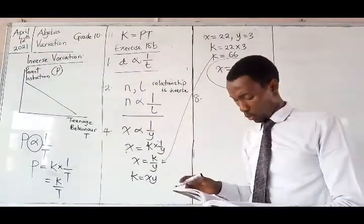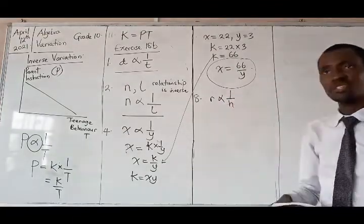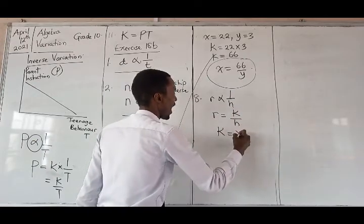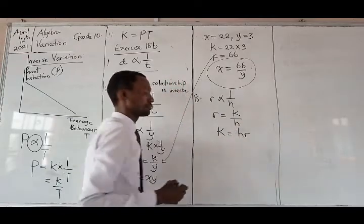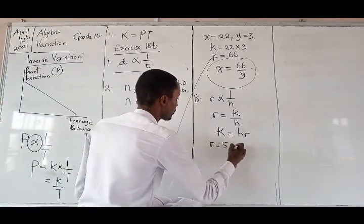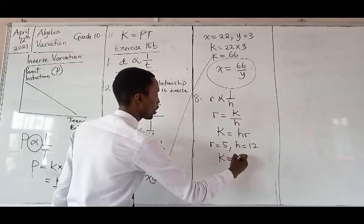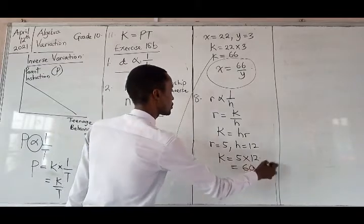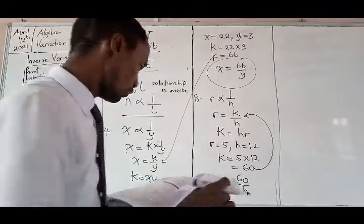So in question 8, we are told that R is inversely proportional to H, or R varies as 1 over H. So what do we do at this point? Step 1: R equals K over H. What is K? RH or HR, obeying the letters of the English alphabet. So we are told that R is equal to 5 when H is equal to 12. That will enable you to obtain your K. So K will be equal to 5 times 12, which will give you 60. So with that, we can also see this back here. R is equal to 60 over H.